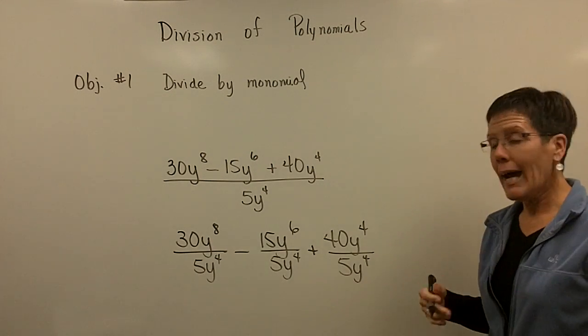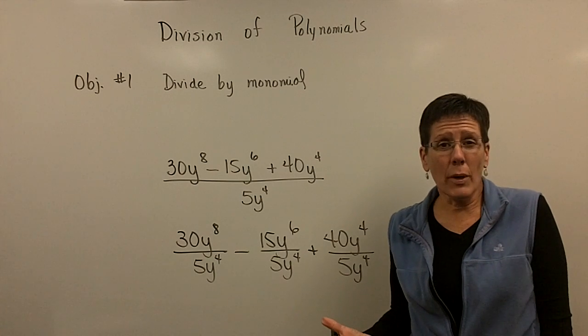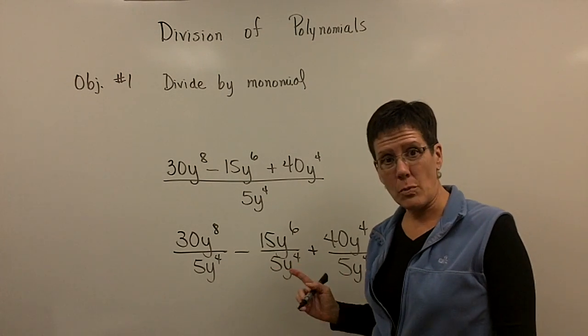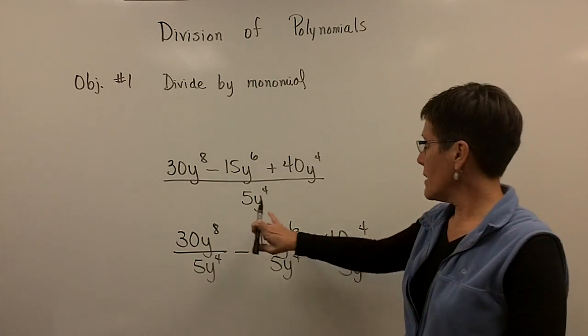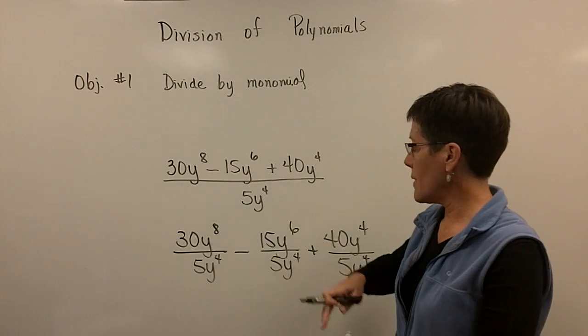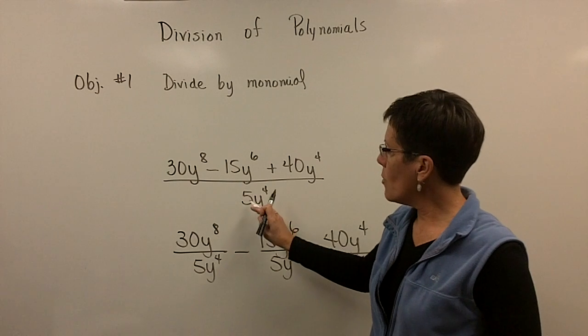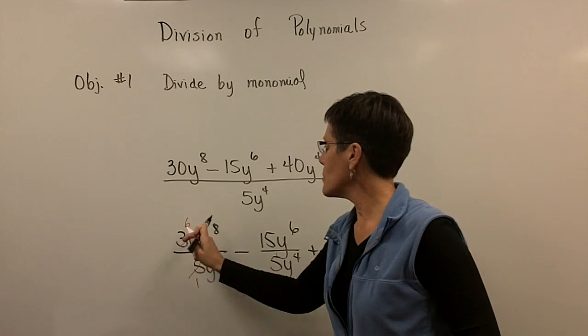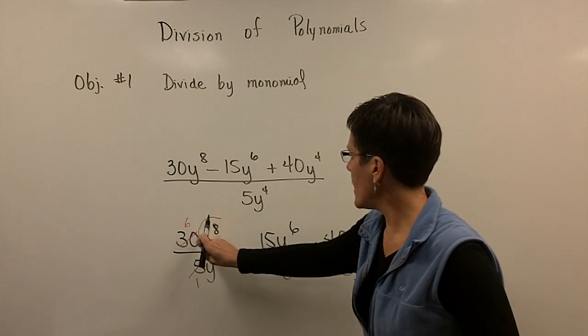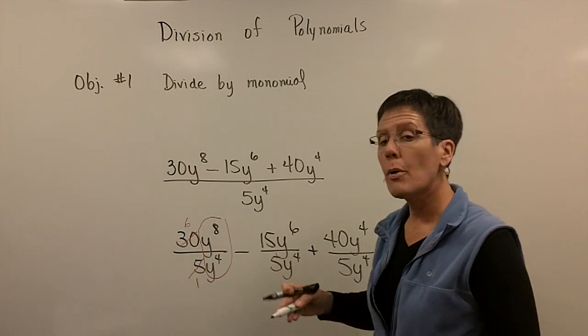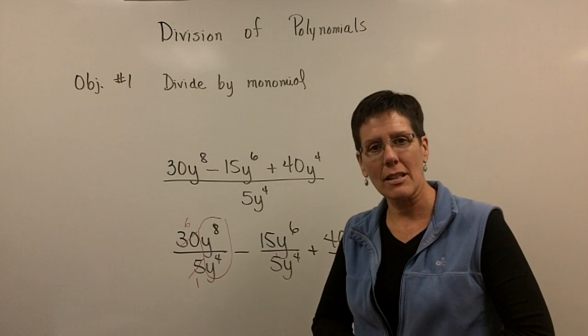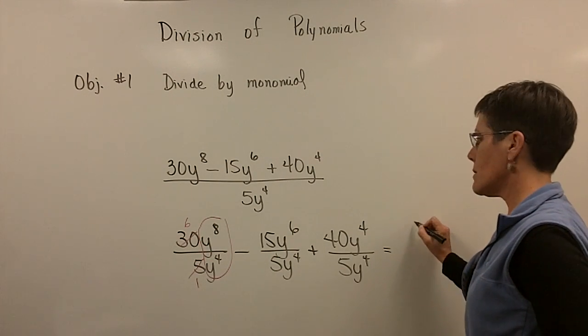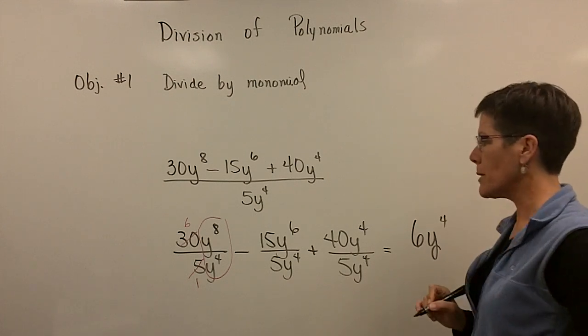So I just have to visualize—you don't have to write this stuff. You have to recognize that it belongs to that term, to that term, and that term. So five goes into thirty six times. And because these bases are alike, they're both y's, I can subtract their exponents. So I'm left with 6y^4.